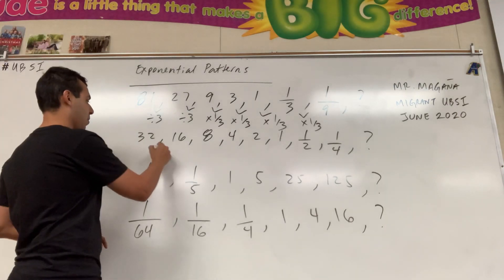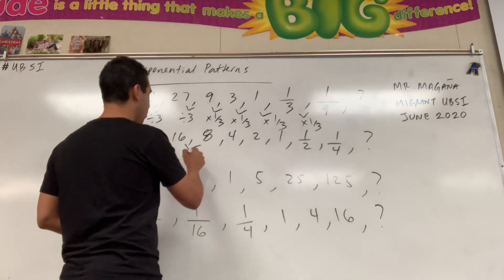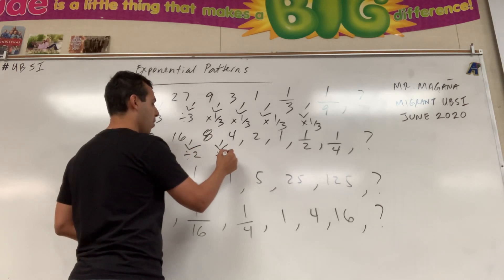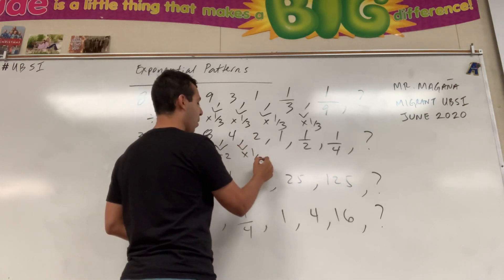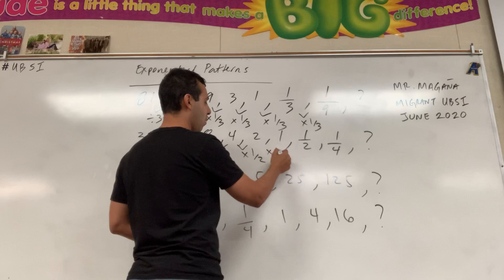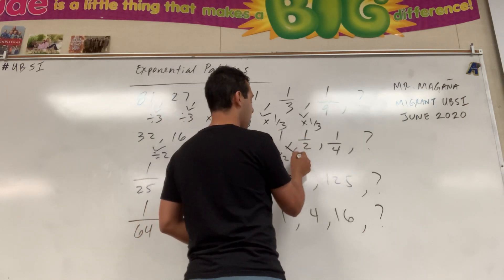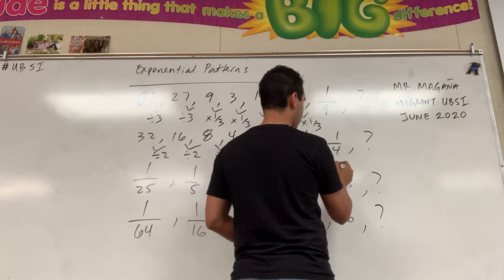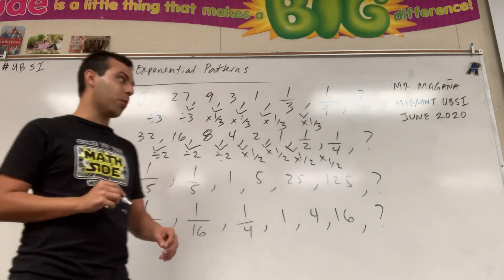32 to 16, division by 2. 16 divided by 2 is 8, divided by 2 is 4, and so we could use multiplication by one-half to get the next number as well. That explains why 1 divided by 2 is one-half and the next number is one-fourth, so that can help you find the next number there.